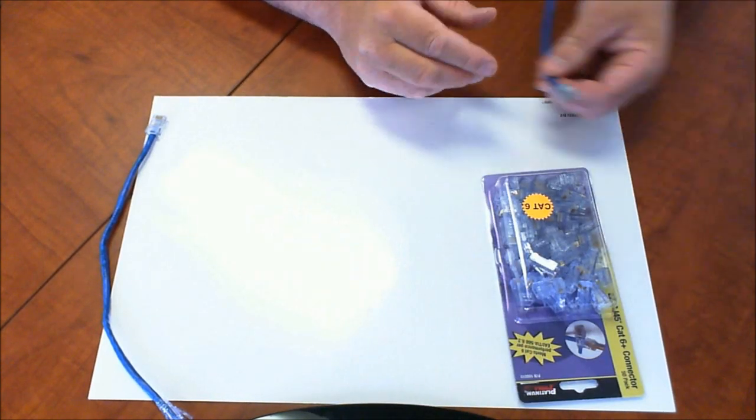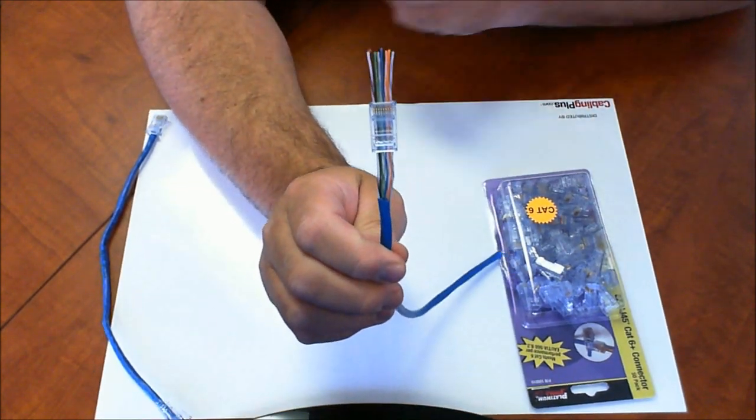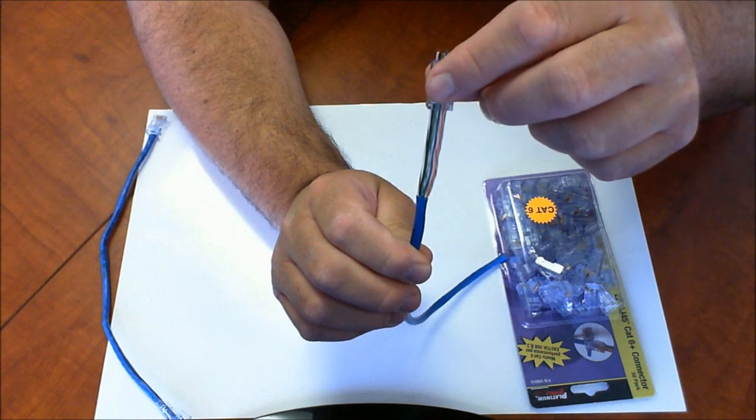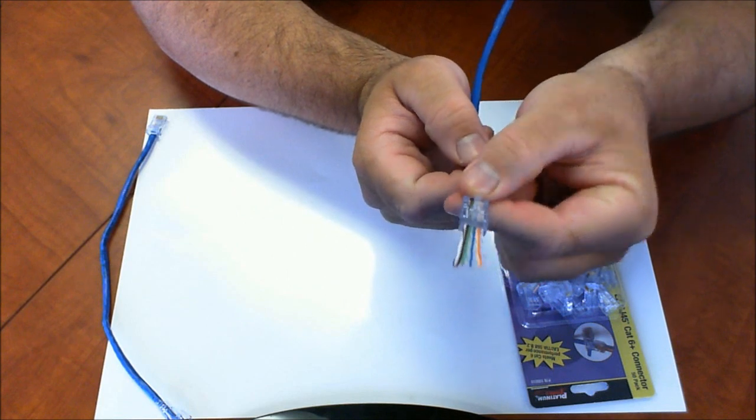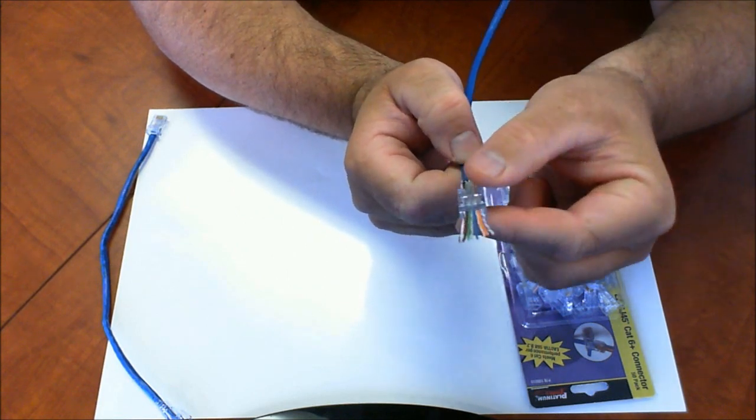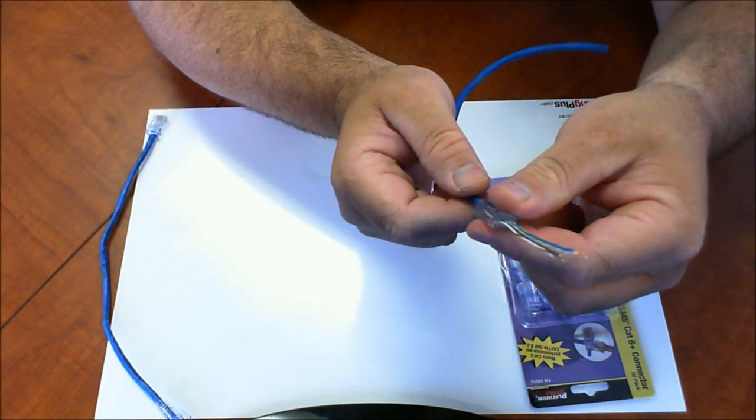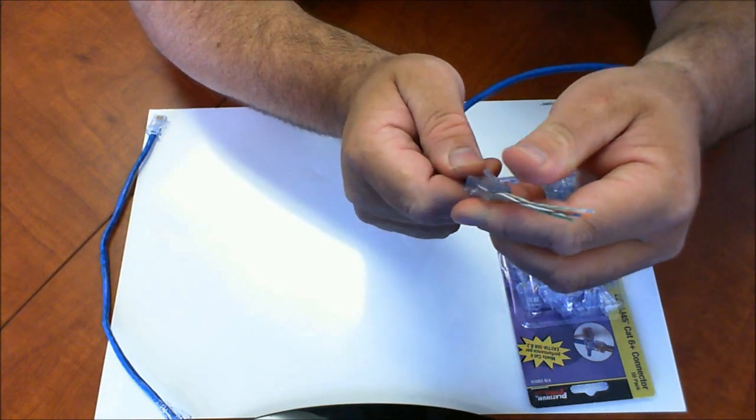Let me show you the connector. The nice thing is once you line up all your color codes, you just slide them right through. It's a pass-through style, which is why they call it the easy style. You can pull the connector down tight.